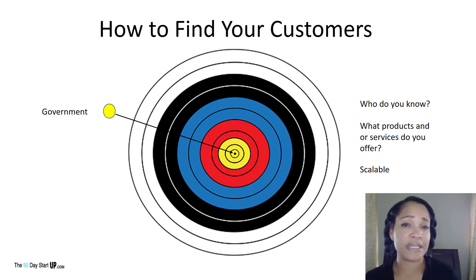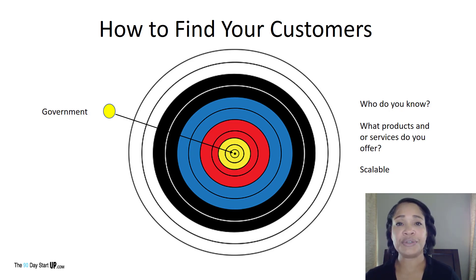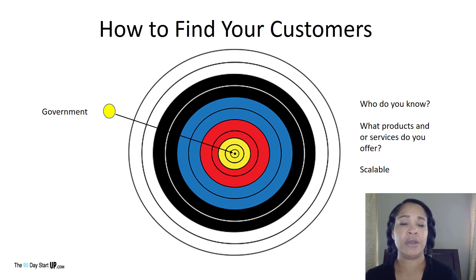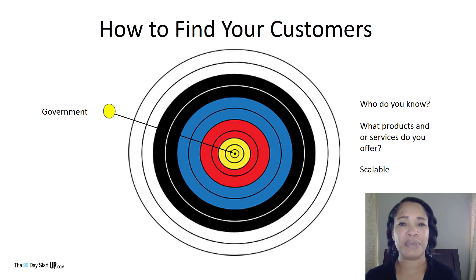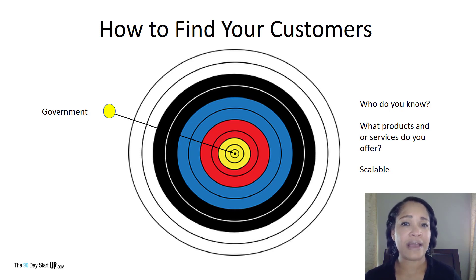Is your company scalable? Can you fulfill a government contract? That's a major thing to consider. You don't want to jump through all the hoops and paperwork to get a contract and then find yourself unable to perform to the contract specifications — that could be bad news. The first thing I would recommend is to contact the SBA. I'm going to take you out to the SBA site so you can see exactly what I'm talking about.